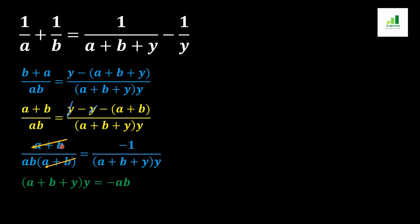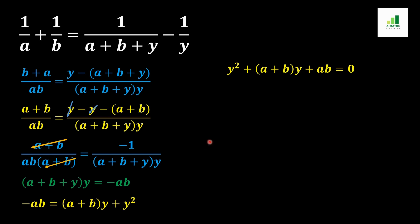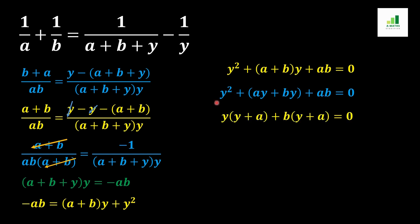After cancelling (a+b) with (a+b), we get -ab = (a+b+y)·y. We arrange this equation as y² + (a+b)·y + ab = 0, because -ab moves to the other side and becomes +ab. This is the same quadratic equation as derived in method 1.